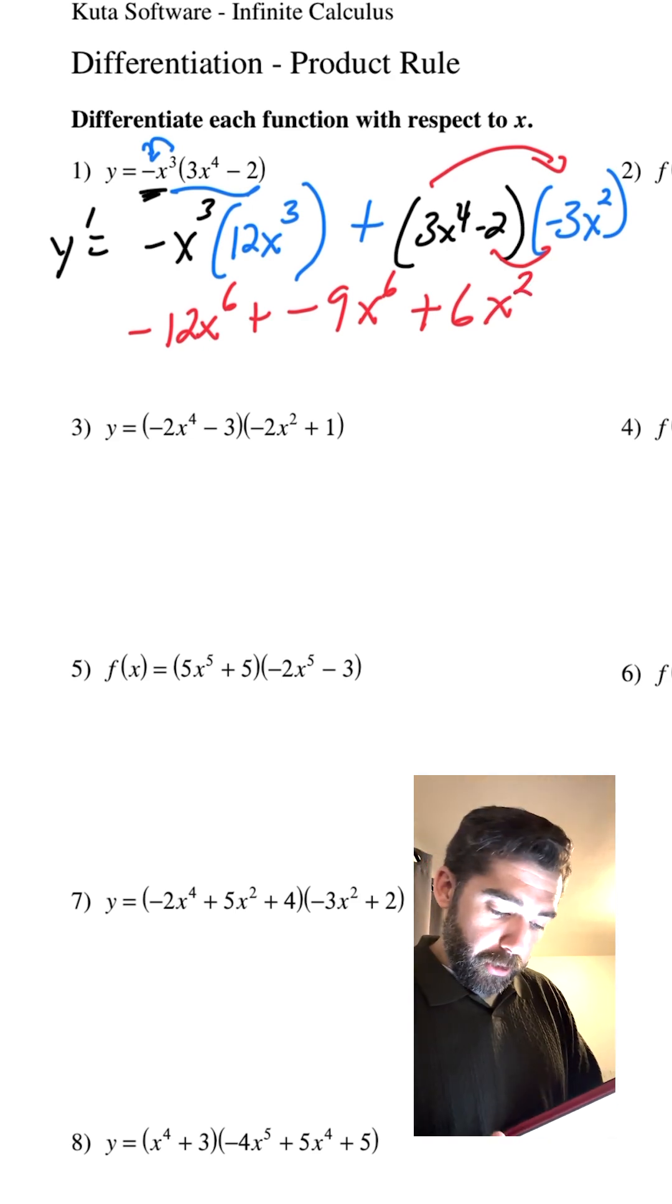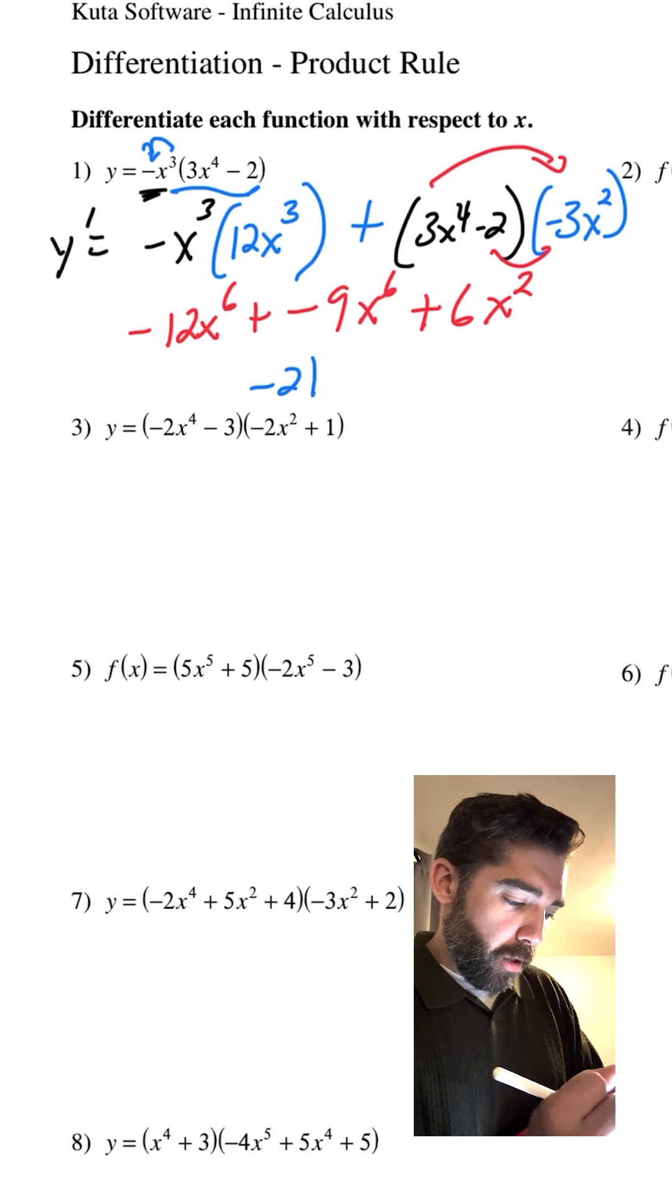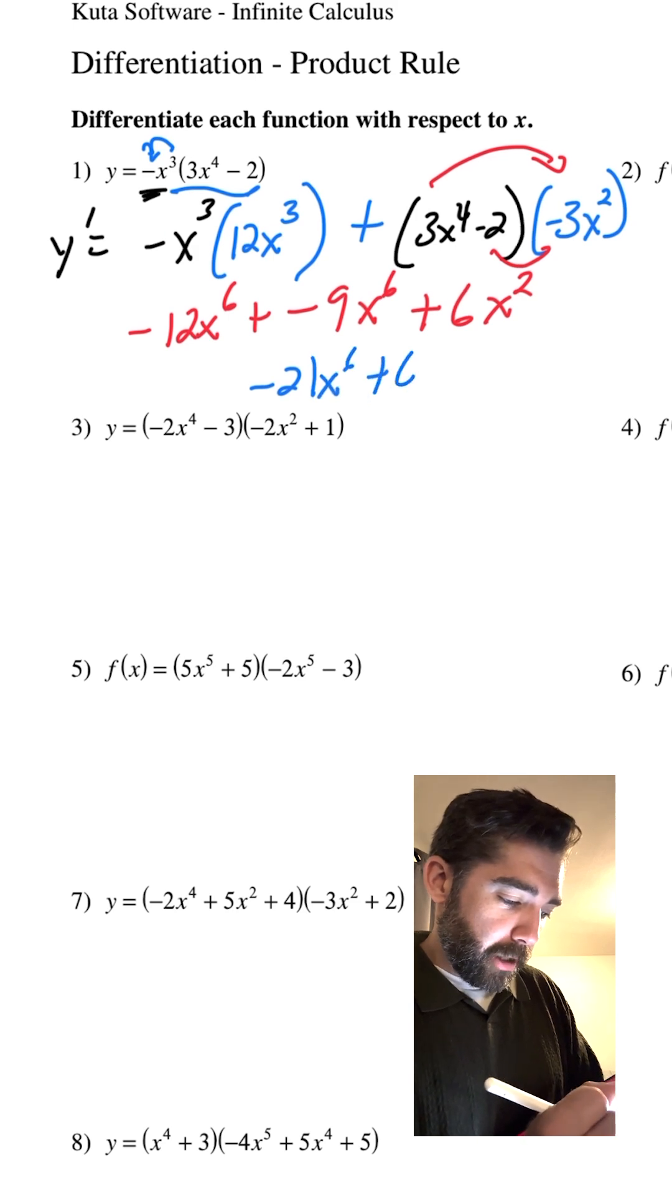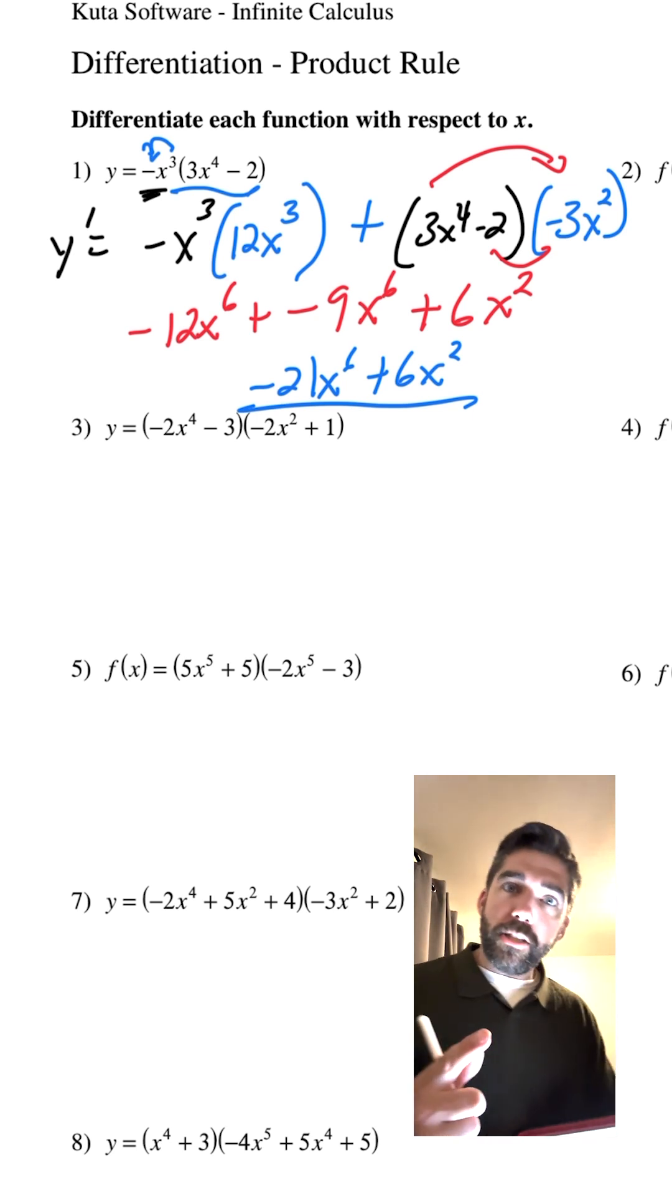We can combine like terms. Don't you love algebra? Negative 21x to the 6th power plus 6x squared. That is how we use the product rule, ladies and gentlemen.